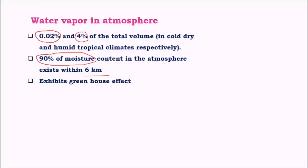Water vapour exhibits the greenhouse effect, helping to maintain heat balance on earth's surface — thus it is an important greenhouse gas. The most important property is that water vapour can absorb both the short-wavelength radiation coming from the sun, like ultraviolet rays, as well as the long-wavelength infrared radiation emitted by earth. As a result, water vapour turns out to be a very important component of atmosphere when it comes to greenhouse effect, absorbing both UV and infrared radiation.